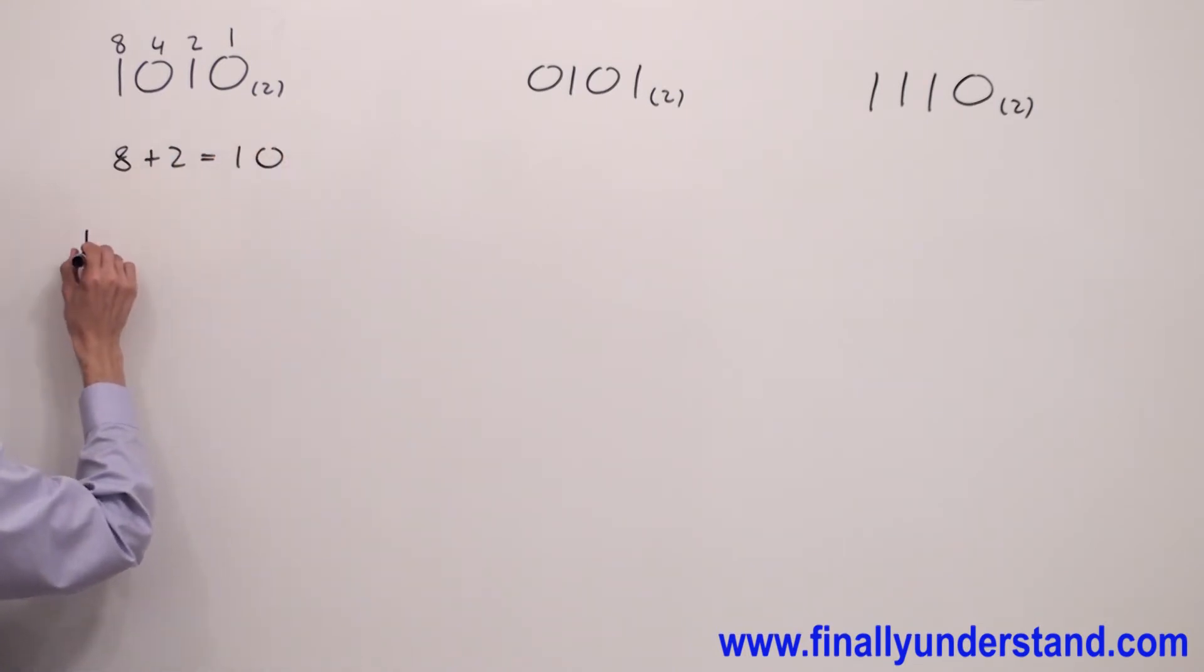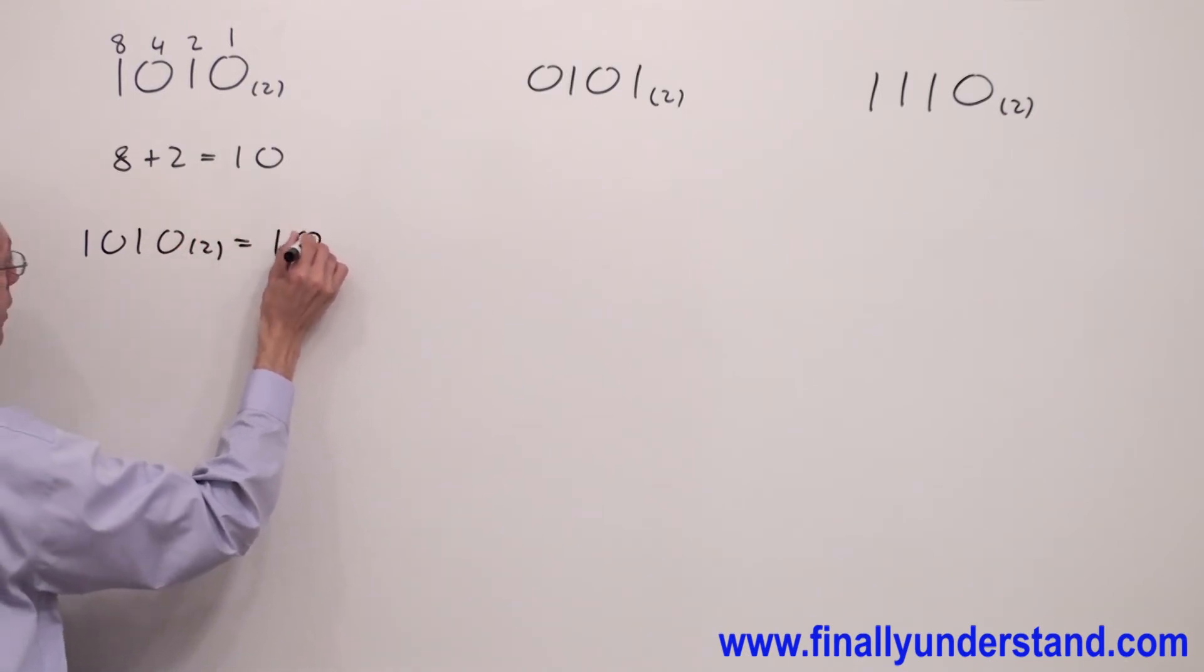So, I can say that one, zero, one, zero, base two is equivalent to ten in base ten.